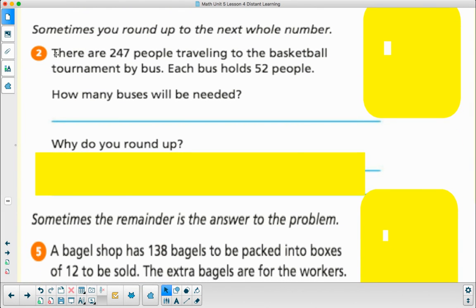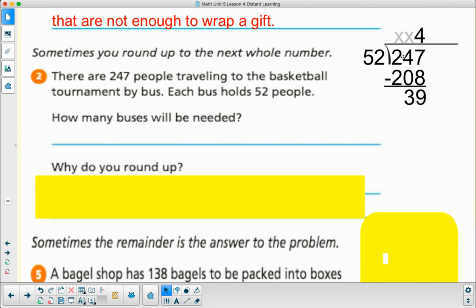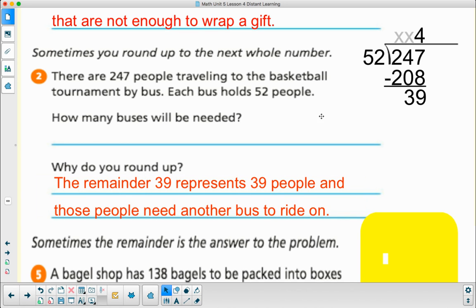Sometimes you round up to the next whole number. There are 247 people traveling to a basketball tournament by bus. Each bus holds 52 people. I'm going to take the 247 people, divide them into groups of 52 for each bus. So there would be 4 buses. That would take 208 people, but I'd still have 39 remaining. Why do I round up?